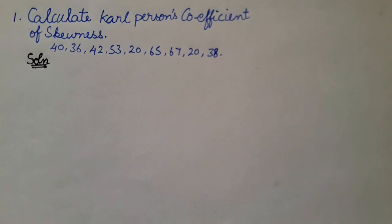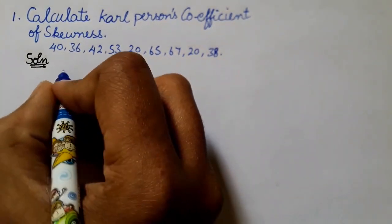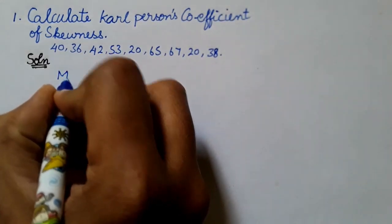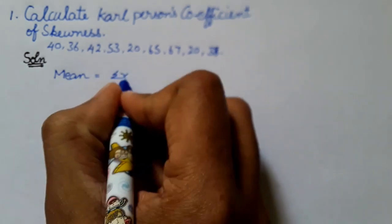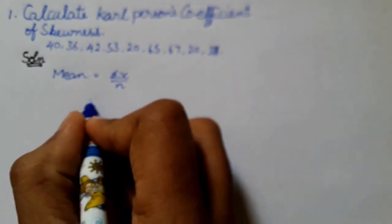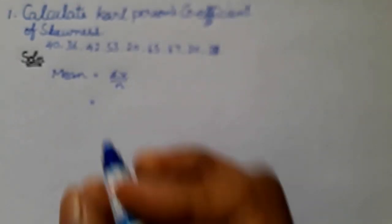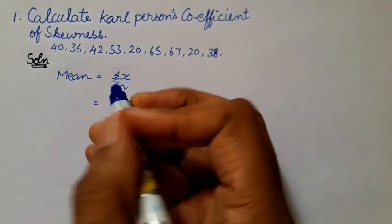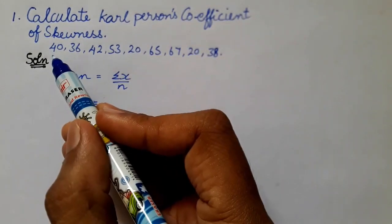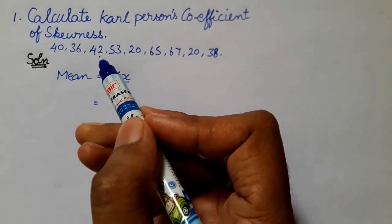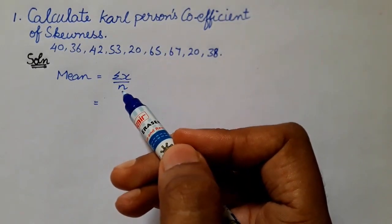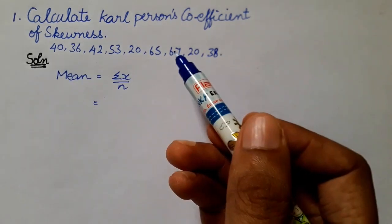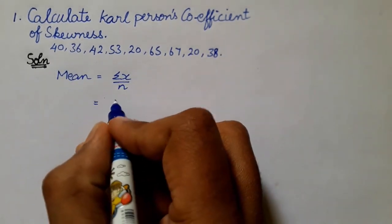First we will calculate the mean. The mean formula is sigma x divided by n. Sigma x is the sum of the given data: 40 plus 36 plus 42 plus 53. We also need to determine n, the number of observations.